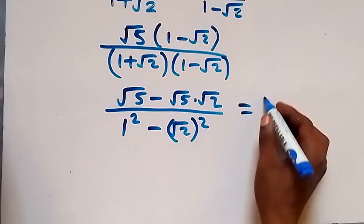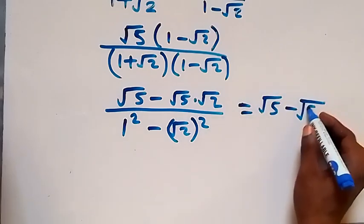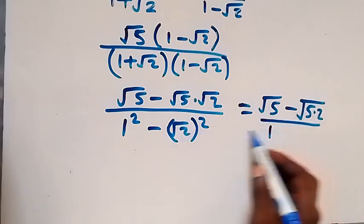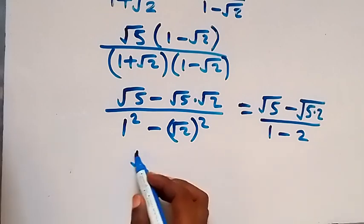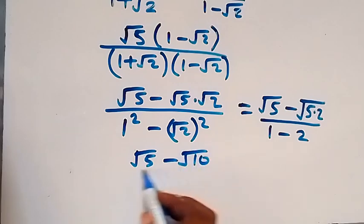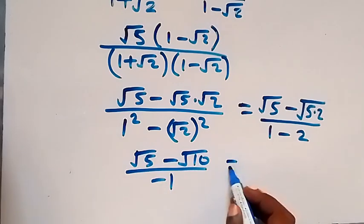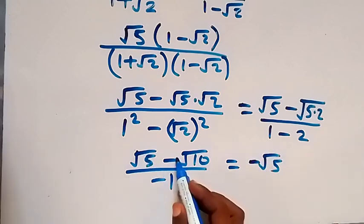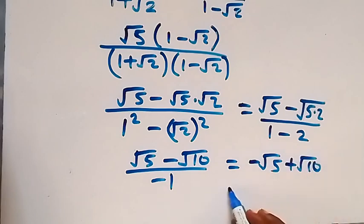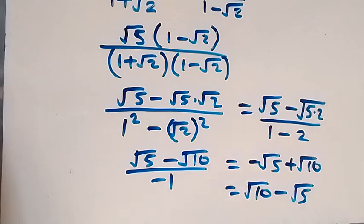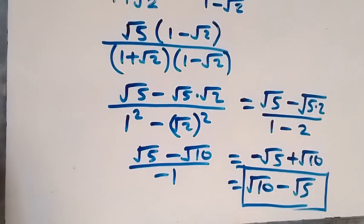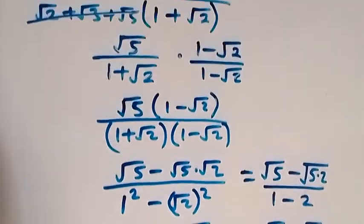We can write this as root 5 minus root of 5 times 2, bringing it together inside the same root, over 1 minus 2. That gives us root 5 minus root 10 over minus 1. Dividing by minus 1, minus root 5 becomes plus root 5 flipped — wait, we get root 10 minus root 5. So the final answer to this problem is root 10 minus root 5. Thank you for watching, don't forget to subscribe for more exciting videos.